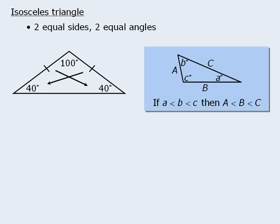Since it's important to deduce which angles or which sides are equal in an isosceles triangle, let's practice this. This isosceles triangle has two equal sides, so which two angles must be equal? Well, the two angles that are opposite the two equal sides must be equal, so we will denote this as follows.